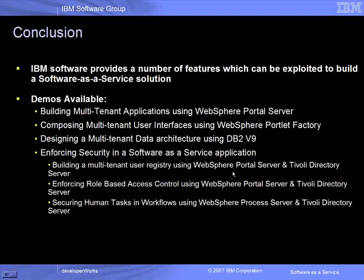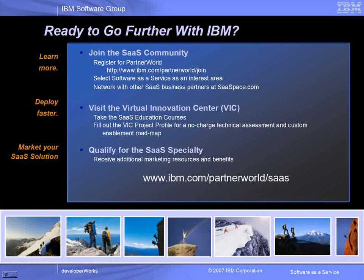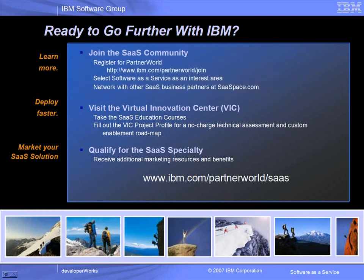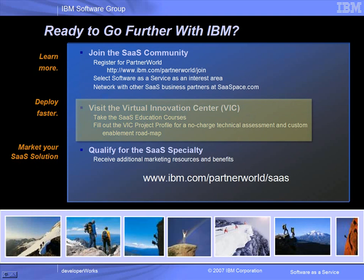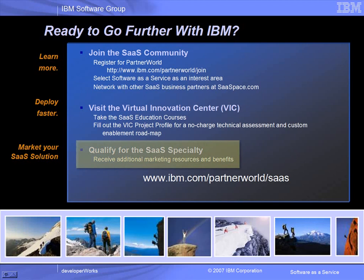IBM Software provides a number of features which can be exploited to build a Software as a Service solution. Please click here to view these demos. IBM has innovative resources and programs to help you manage change and become relevant in the Software as a Service market. Whether you're an ISV, system integrator, or reseller, we can provide education, support, and benefits to help you grow revenue and differentiate yourself. The first step will be to join the SaaS community, where you will be kept aware of new SaaS technical benefits and workshops. Then, as a member of the IBM SaaS community, you can register at the Virtual Innovation Center (VIC), where you will get personalized access to product support and education. As an advanced-level member of Partner World, you have the opportunity to gain access to additional marketing and sales support by qualifying for the Software as a Service specialty. For more information, visit our main site at www.ibm.com/partnerworld/saas.